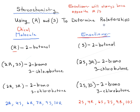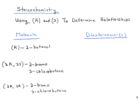The enantiomer is the non-superimposable mirror image. In order to be the mirror image, all of the stereocenters on one enantiomer have to be the opposite configuration of the stereocenters on the other enantiomer.